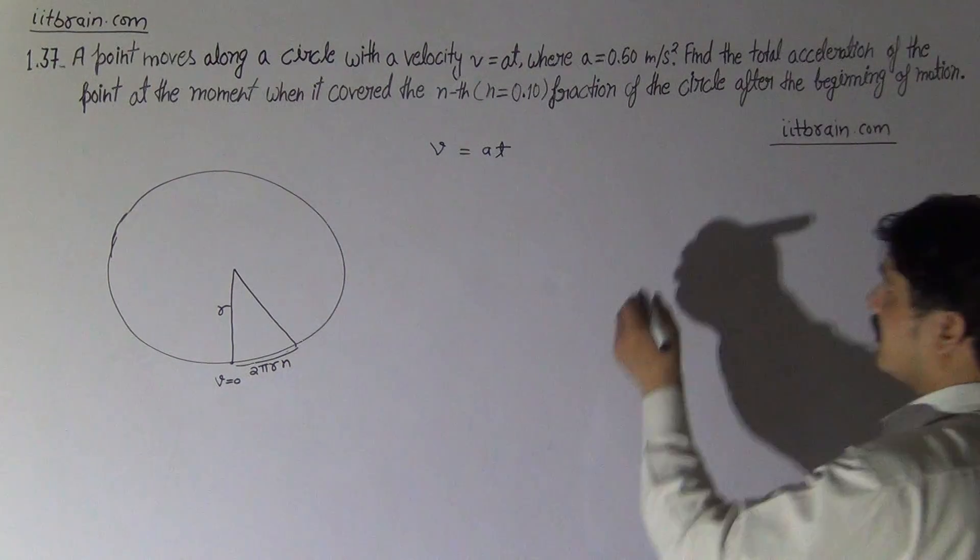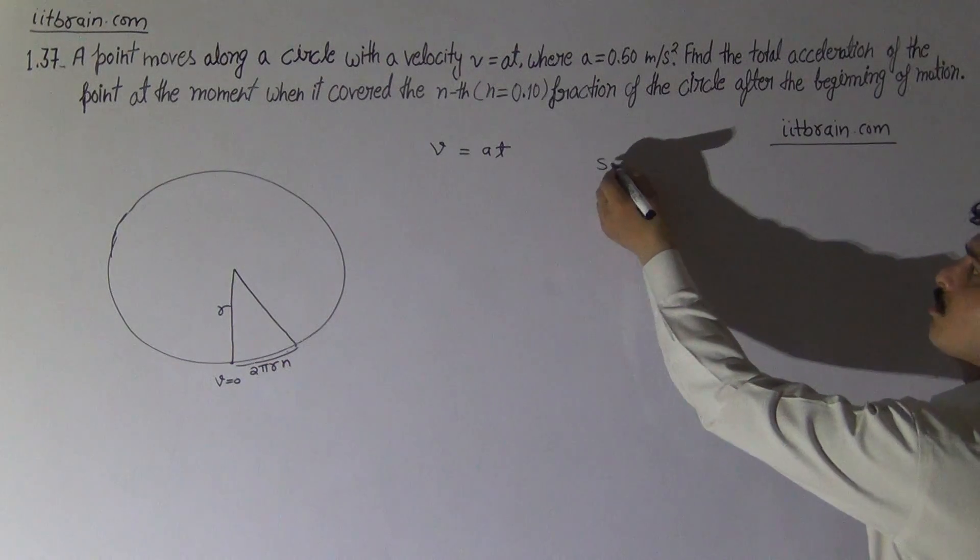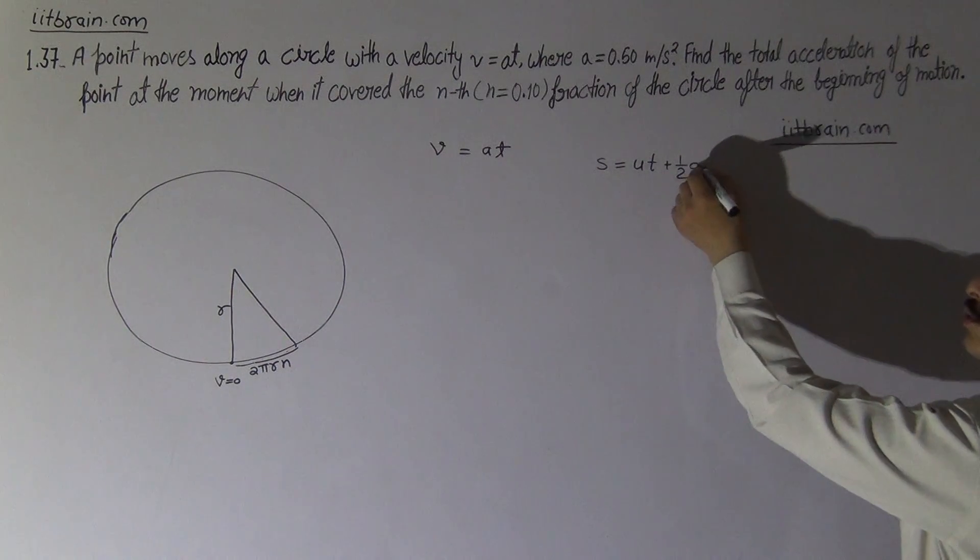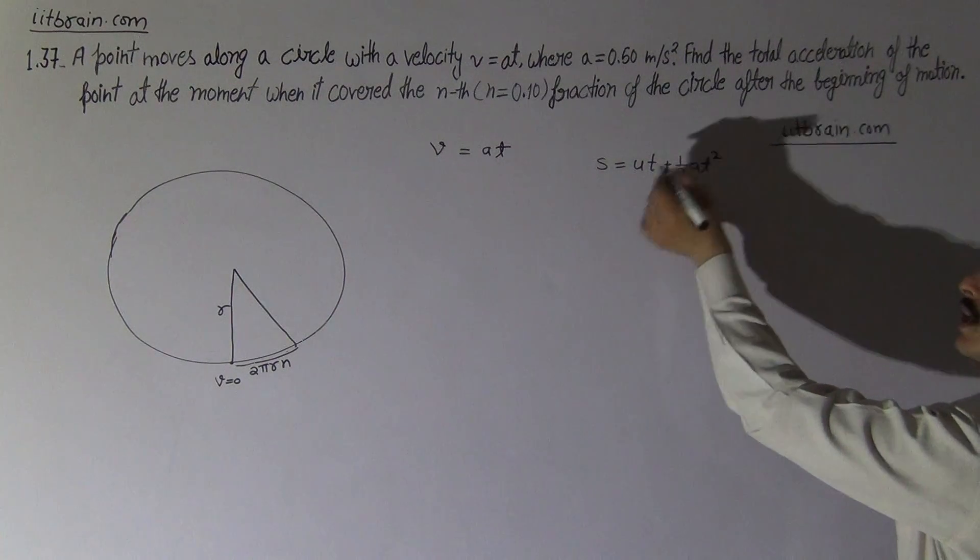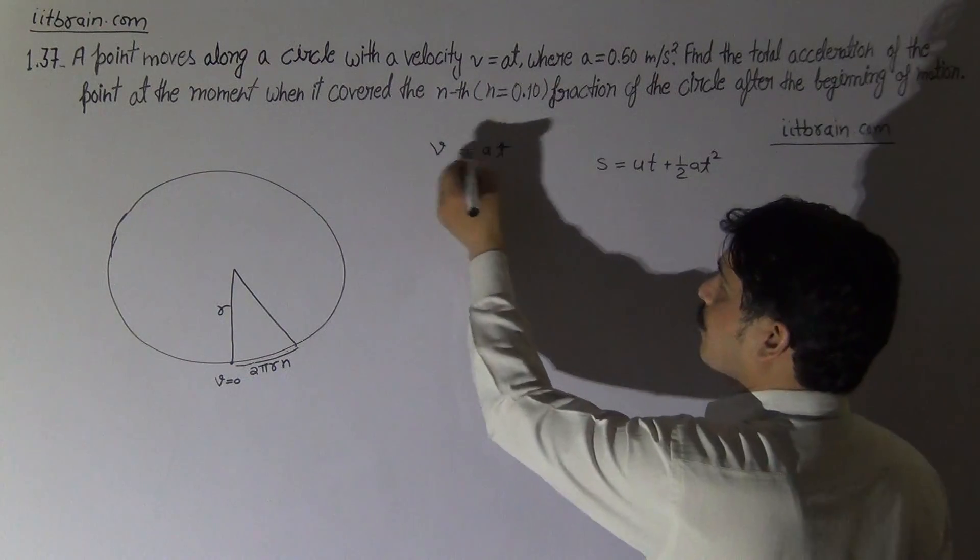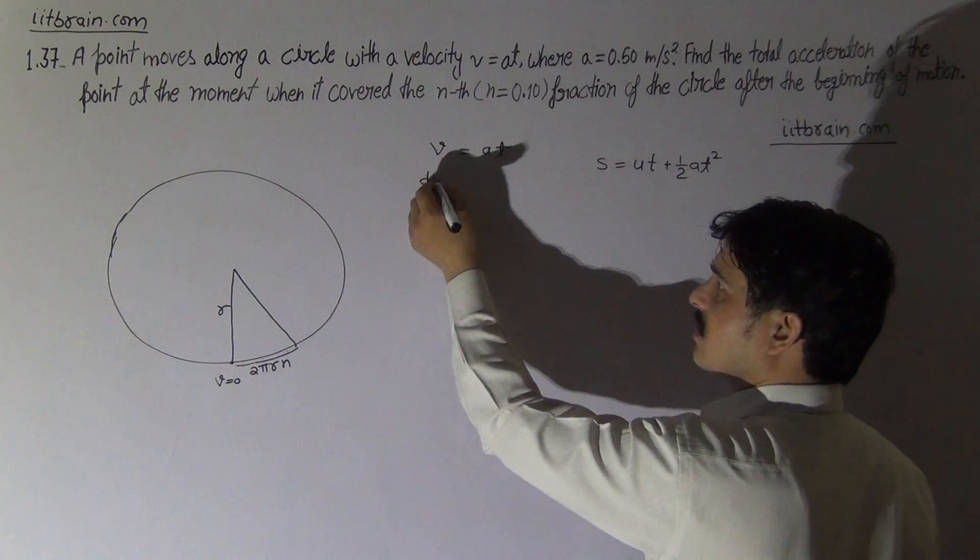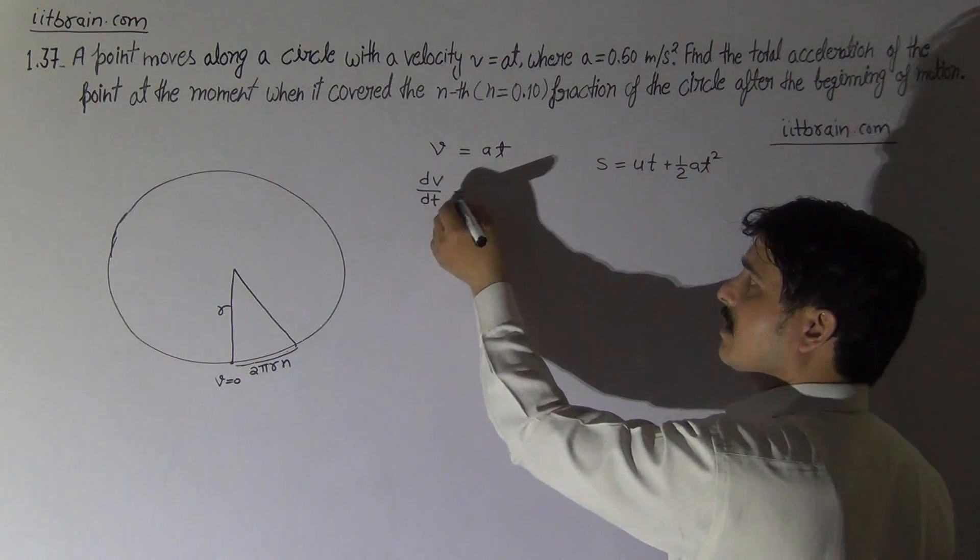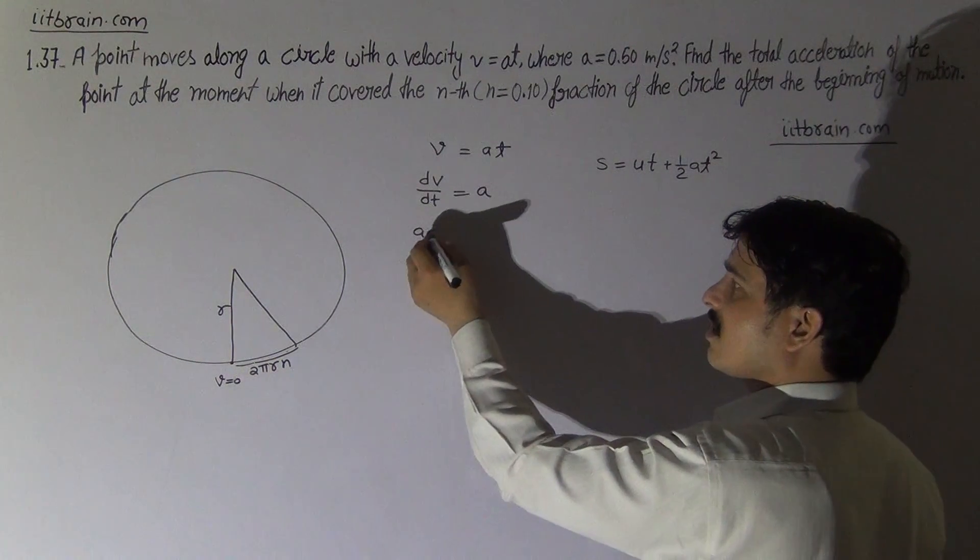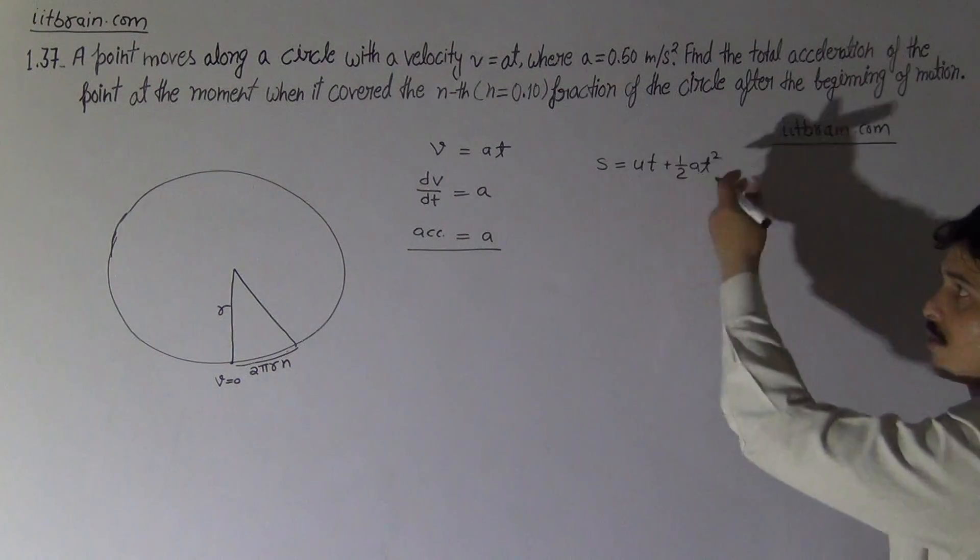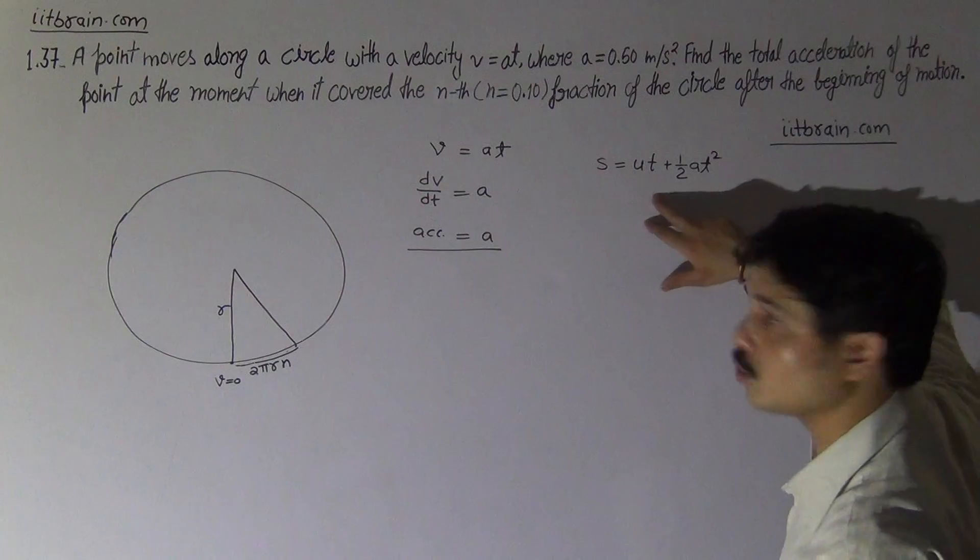For getting this, it is simple to use the equation s = ut + ½at². We can use this equation because V = at implies that acceleration of the particle is constant. If we differentiate this, then dV/dt will become a. It means acceleration is equal to a, which is constant. So Galileo's equations can be used.